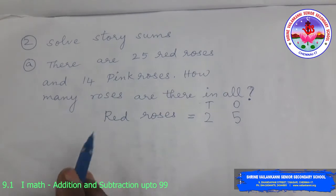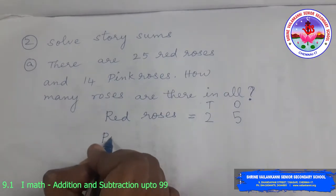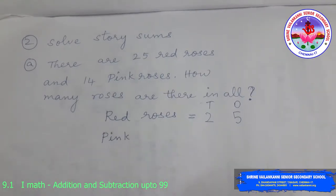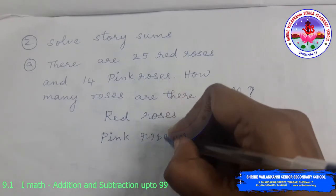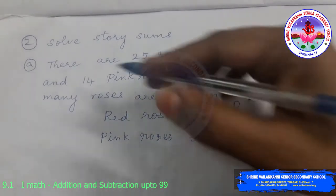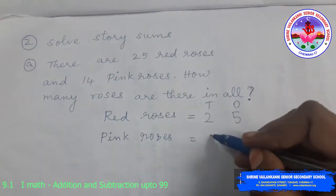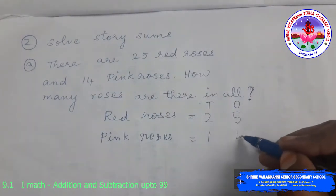The next is, how many pink roses? So pink roses is equal to how many? 14. So 1 10s and 4 1s.